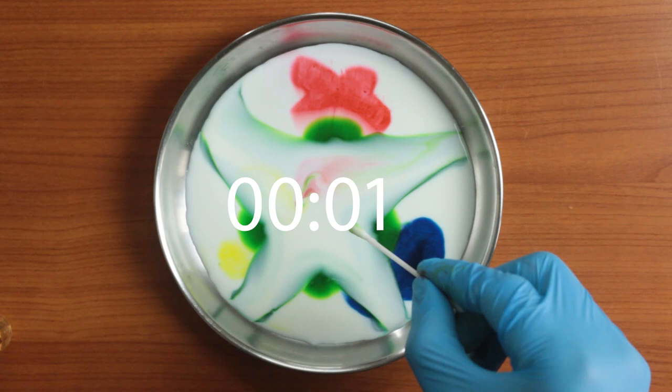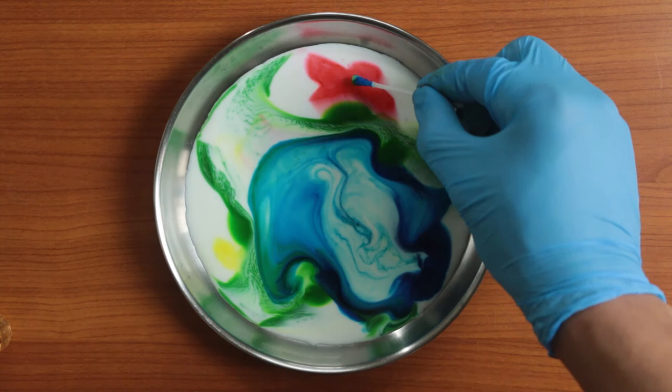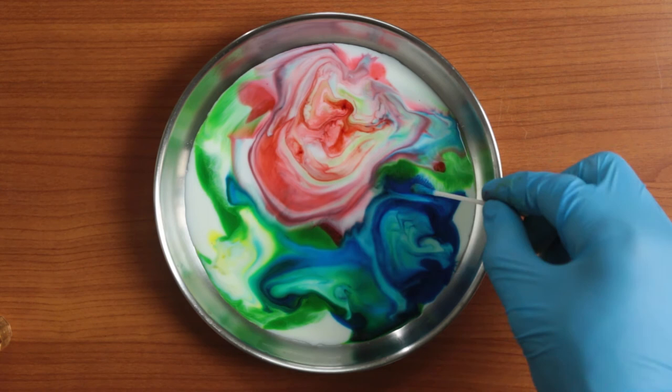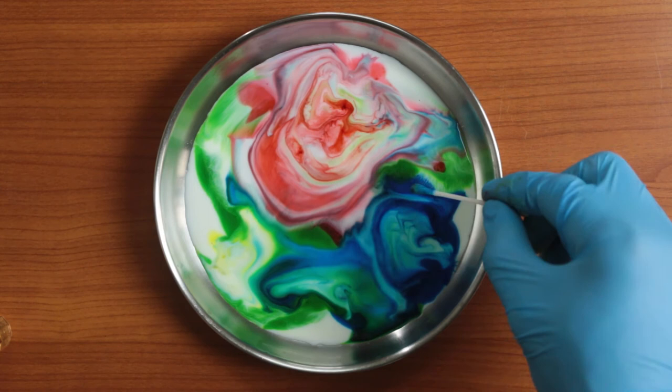Milk has fat in it. And the fat molecules are connected by very strong bonds. We use dish soap to wash our dirty dishes because the soap breaks down these bonds. When we add soap to the milk, the bonds between the fat molecules become weaker. And the surface can no longer keep the dye in place.